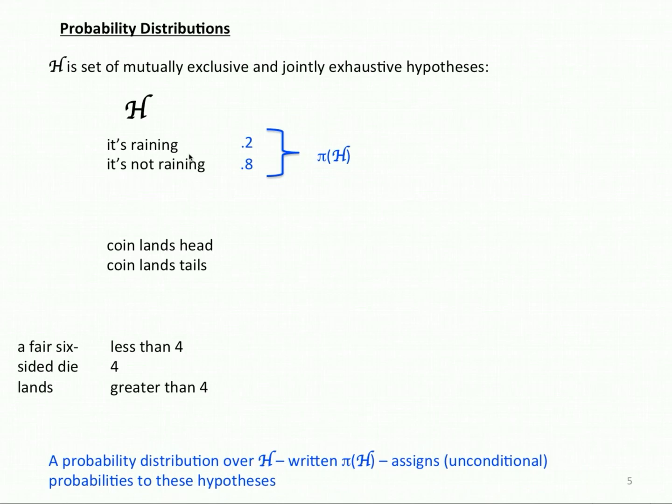So, for example, the hypothesis it's raining or it's not raining - π assigns 0.2 to it's raining, 0.8 to it's not raining. For this pair, π assigns 0.5 to heads and 0.5 to tails.